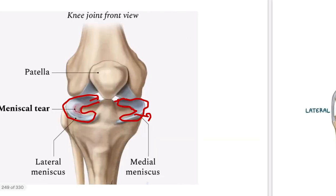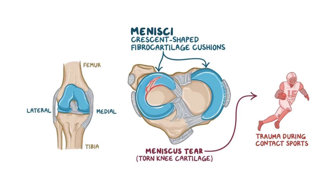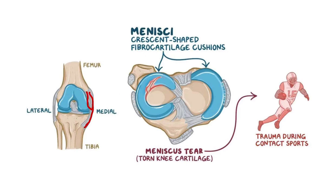In this picture also we can see the menisci tear. This one is the medial menisci and this one is the lateral menisci. In this picture we are showing the lateral menisci tear, which is the less common. There are some important ligaments: this one is the medial collateral ligament and it is attached to the medial menisci. On the other hand, laterally there is the lateral collateral ligament but it is not attached to the lateral menisci.